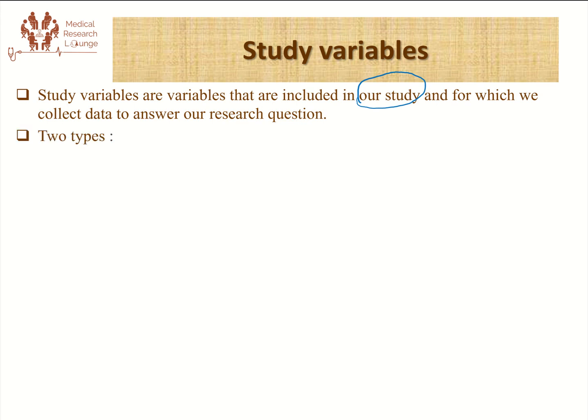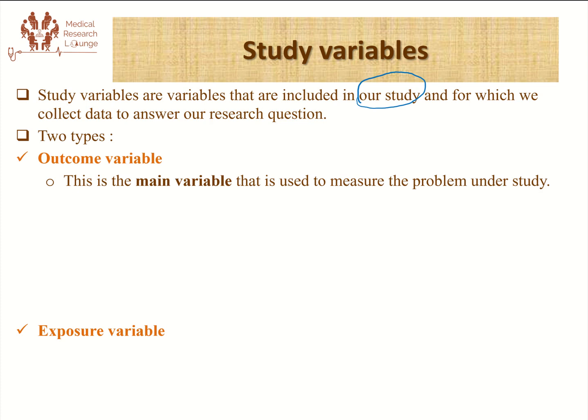There are two major types of study variables in any research. The first is the outcome variable and the other is the exposure variable. The outcome variable is the main variable we are studying — that means the main problem we want to measure in our study. Every research starts with a research question, and by that question we want to answer or solve a problem. That major problem we want to solve is called our main variable or outcome variable. Every research usually has one research question, so for one research question we are expected to have one outcome.